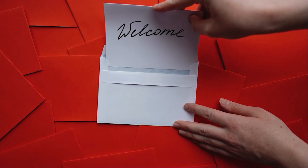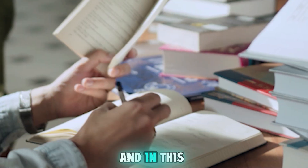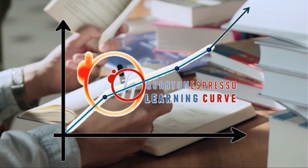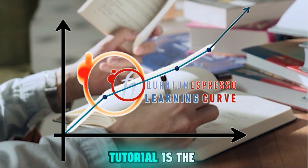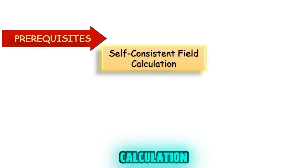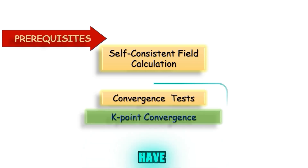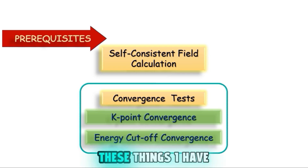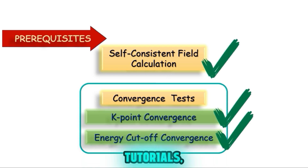Hello everyone, welcome back. This is the fifth tutorial of Deep Tactical Classes, where we are learning how to use Quantum ESPRESSO efficiently. The topic of this tutorial is the relaxation calculation. The prerequisites are that you should know how to run an SCF calculation and have converged k-points and a converged cutoff for energy, which I have already described in the previous tutorials.